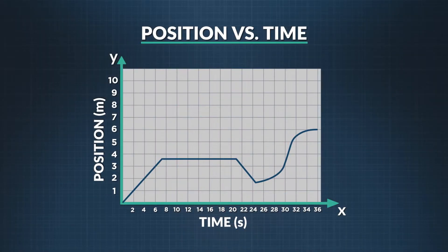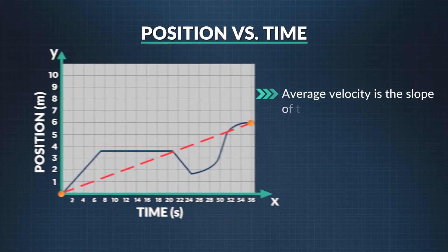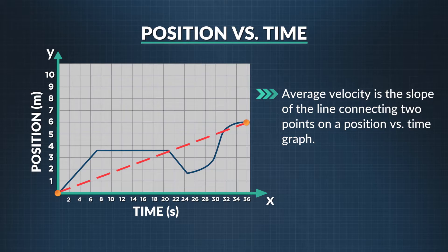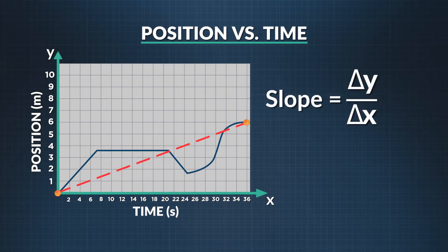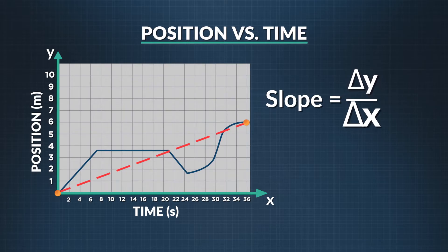Now let's graph Summer's average velocity for her entire journey. Her average velocity is her total displacement divided by the time elapsed. So take two points — one at the beginning of her journey and one at the end. Her average velocity is the slope of the line connecting these two points. Find the slope of the line connecting the two dots with the same slope equation: the change in y, or position, divided by the change in x, or time.